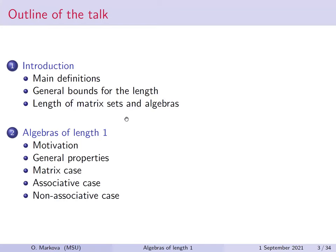The plan of the talk is as follows: first, an introduction with the main definitions of the length function, some general bounds for the length, and the question of the length of matrix algebras — a well-known open problem. Then the main part will be about algebras of length equal to one, giving complete characterization in different cases: matrix algebras, associative algebras, and non-associative algebras.